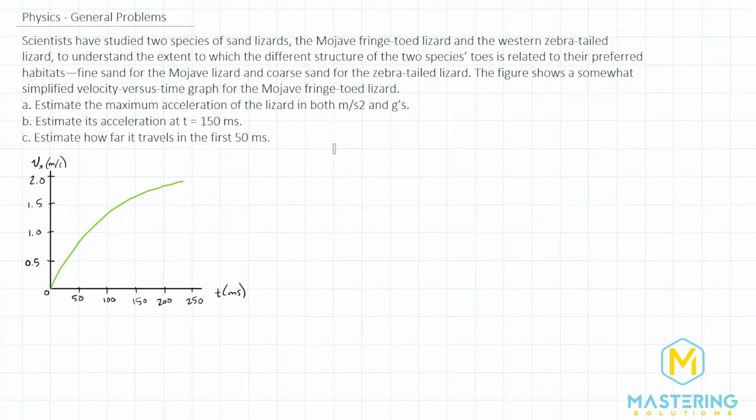Welcome to Mastering Solutions. In this general problem, they tell us that scientists have studied two species of sand lizards, the Mojave Fringetoe Lizard and the Western Zebretoe Lizard, and that they want to understand the different structures of their toes in reference to their habitat.